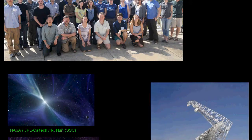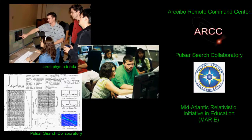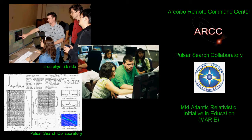On that note, the members of NANOGrav support a number of major outreach programs, including the Arecibo Remote Command Center, the Pulsar Search Collaboratory, and the Mid-Atlantic Relativistic Initiative in Education. These projects are aimed at helping to get high school students and undergraduate students involved with real research early on, and this research is making an actual contribution to the scientific community. They operate the telescopes, they analyze the data, and they make the discoveries. Already, dozens of new pulsars have been discovered by high school and undergraduate students in these programs, and a few of these pulsars are actually stable enough to be added to our pulsar timing array.